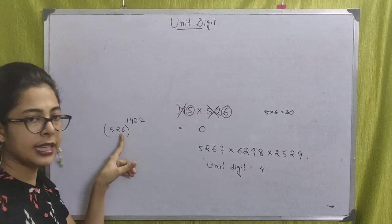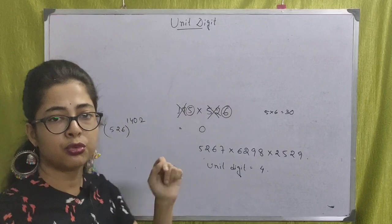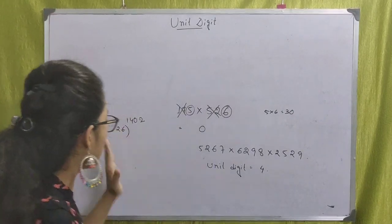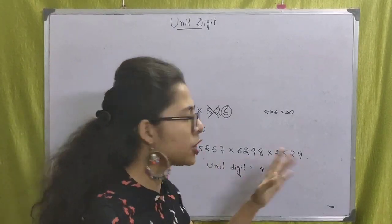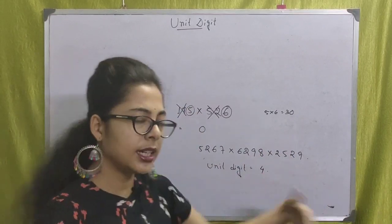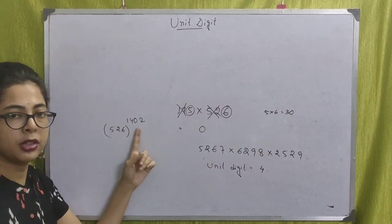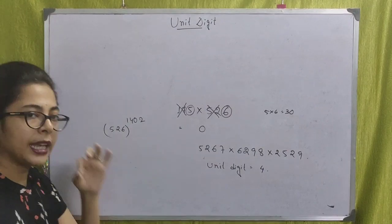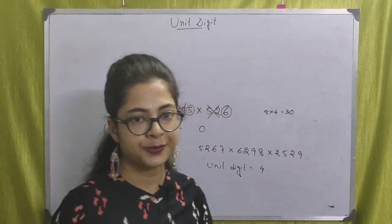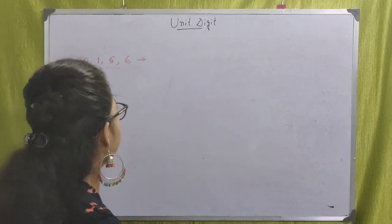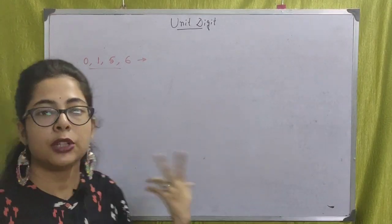For 526 to the power of 1402, we only focus on the unit digit, which is 6. So we need to find 6 to the power of 1402. We can follow this trick easily.